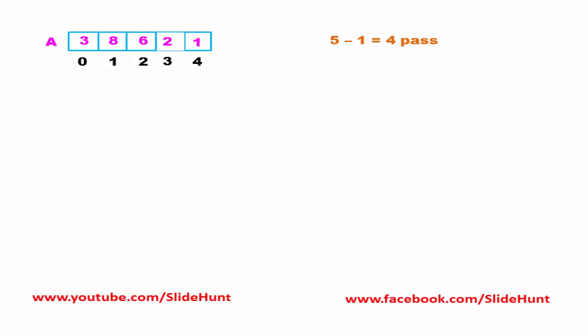Here, we scan the array from left to right for a particular element. While scanning, we compare that particular element with the adjacent element. We compare element 3 at index 0 with 8 at index 1. If the element at the current position is greater than the adjacent element, then we swap the two elements. Here, 3 is less than 8, so we are not going to swap these two elements.